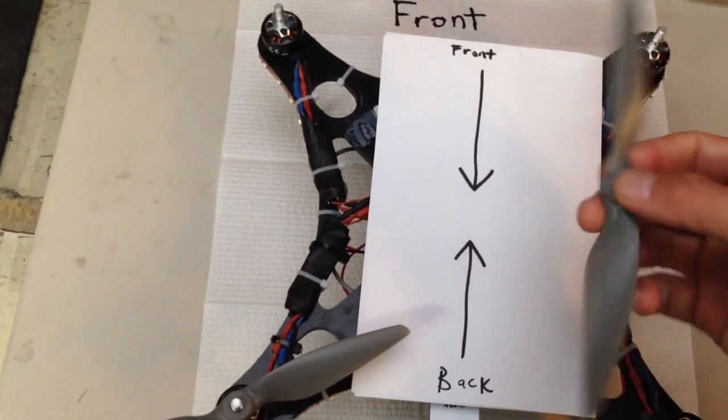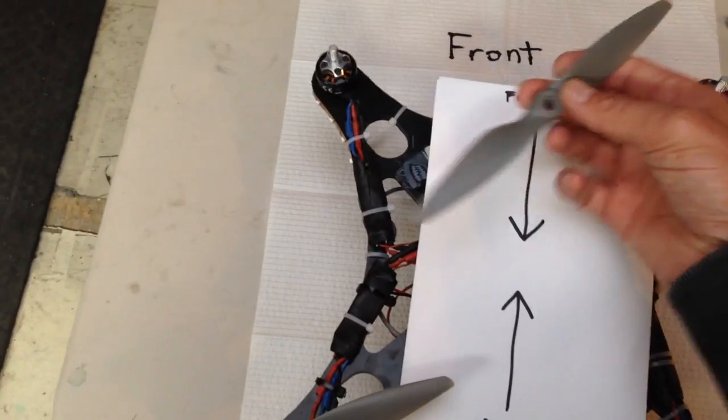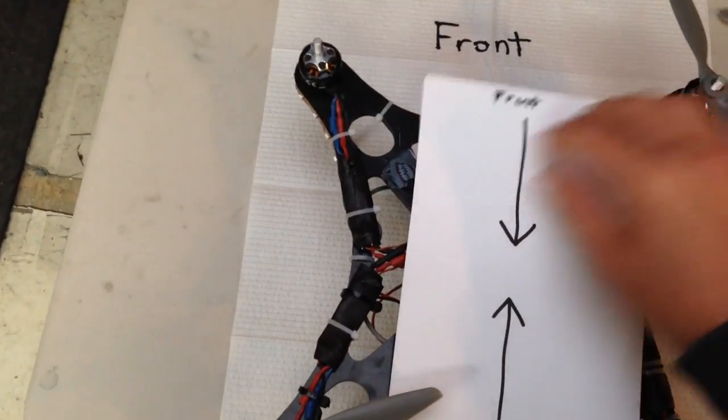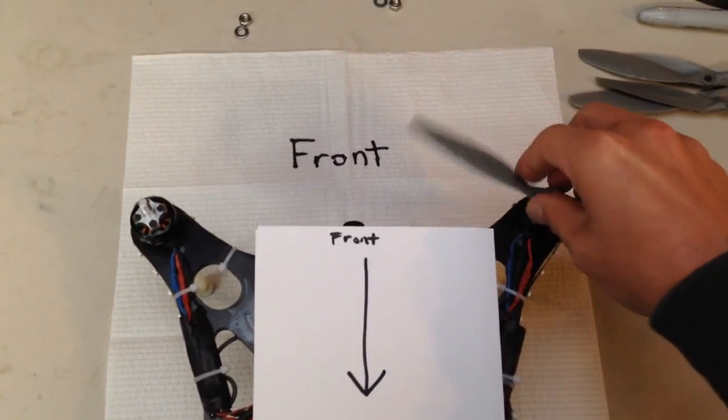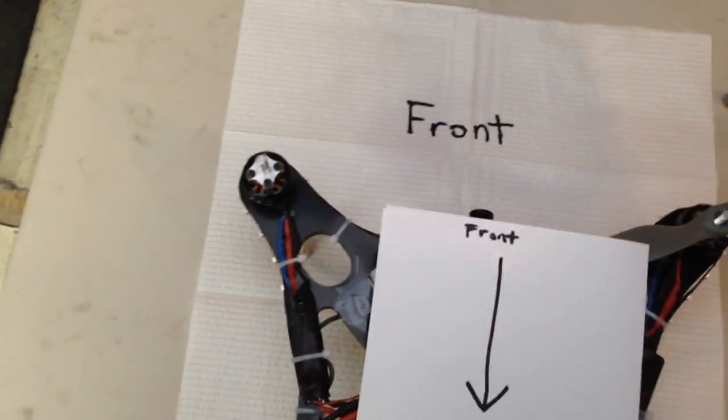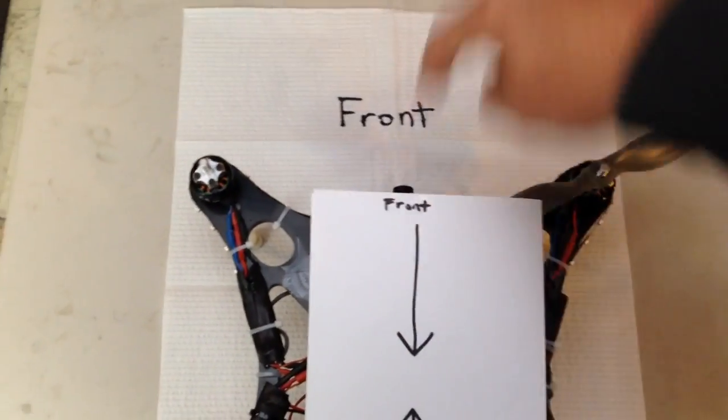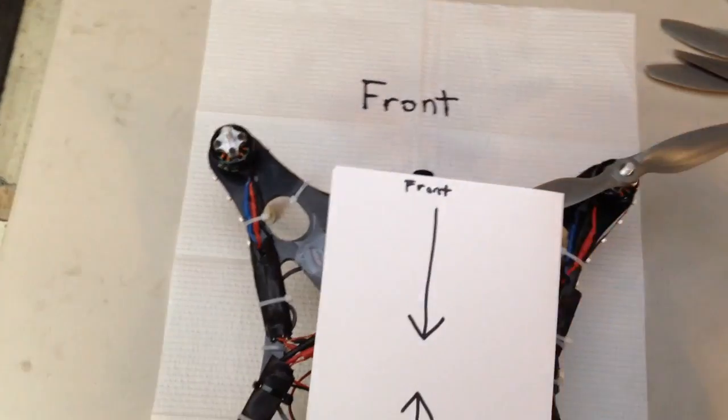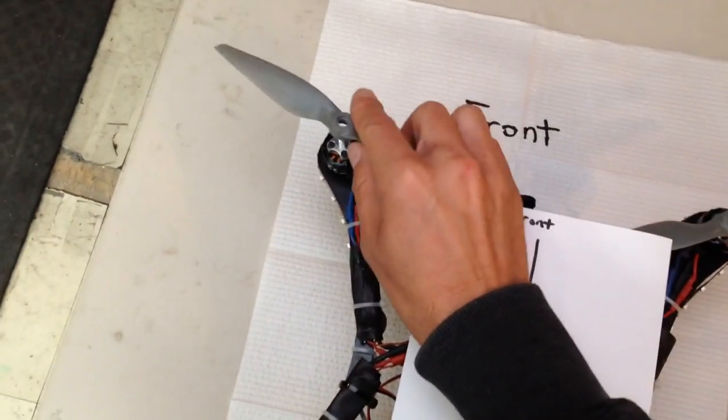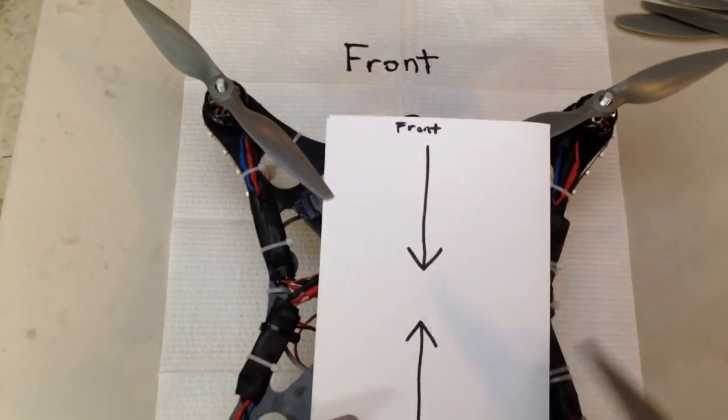This one here is going to go on the front right because the leading edge is here and it's coming into the quad. So I always imagine a big circle here coming into the quad. So this one's going to go here obviously and this one's going to go here.